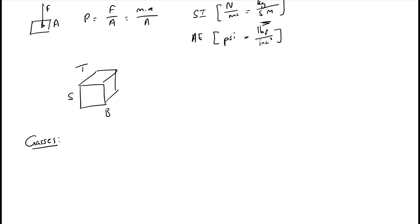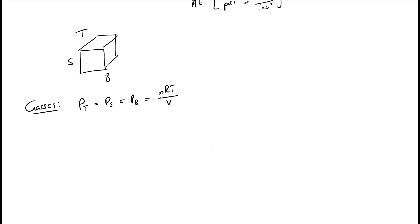For gases, if we take any one of the sides of this cube away, the gas will escape. The gas particles are moving everywhere, bumping into each other, and they're exerting the same pressure everywhere in this volume. This means that P at T equals P at S equals P at B, and is equal to nRT over V.